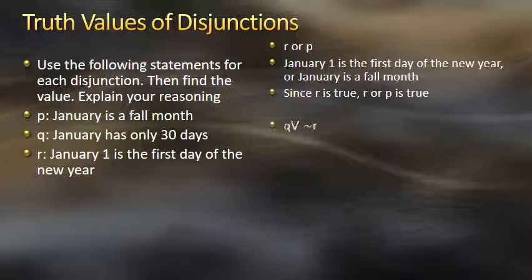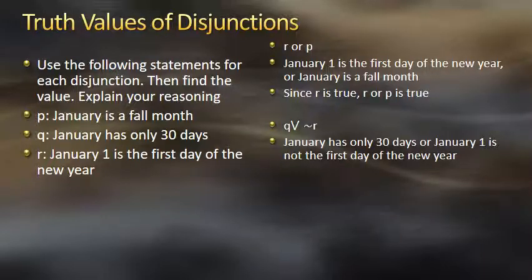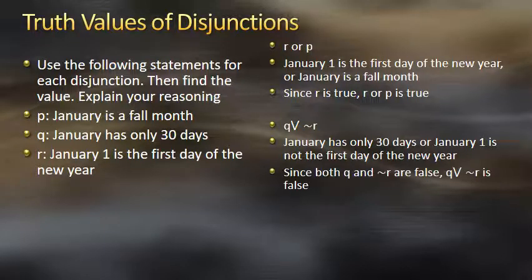The next disjunction is Q or not R. Q is 'January has only 30 days' and not R reads 'January 1 is not the first day of the new year.' The compound statement is: 'January has only 30 days OR January 1 is not the first day of the new year.' Q is false because January has 31 days. And the negation of R is certainly not true because January 1 is the first day of the new year. Since both Q and the negation of R are false, Q or not R is false.